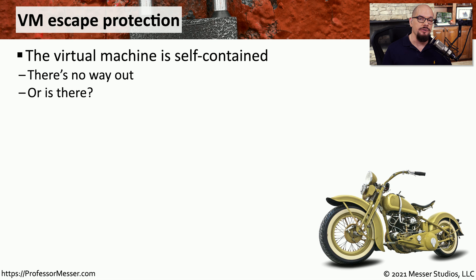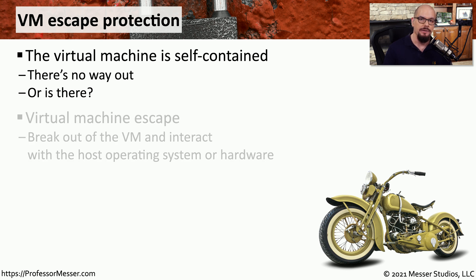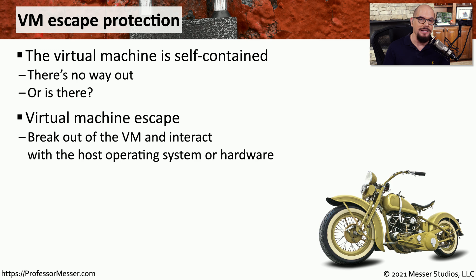One of the useful characteristics of a virtual machine is that it is self-contained. Everything happening within that virtual machine only happens as part of that VM and has no effect on any other VMs that might be running on that network. Unfortunately, there is an attack type called a virtual machine escape that would allow someone on one virtual machine to be able to gain access to resources that are on a completely separate virtual machine.